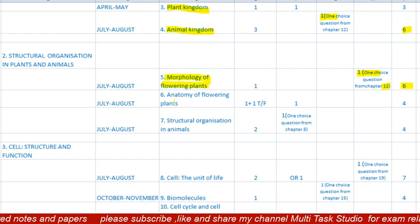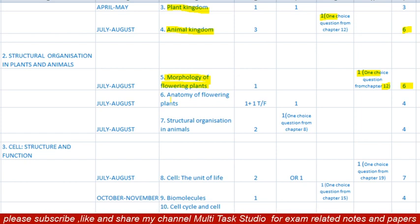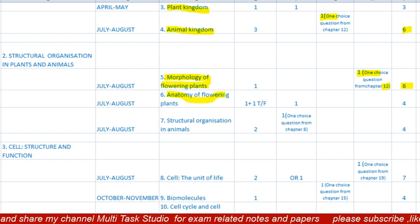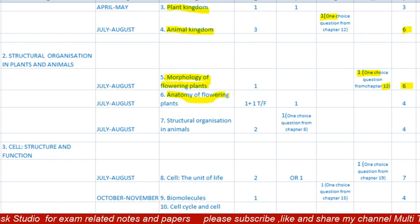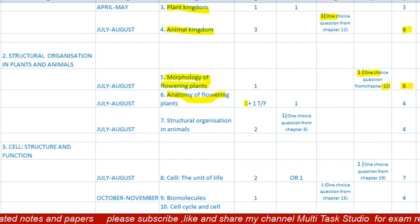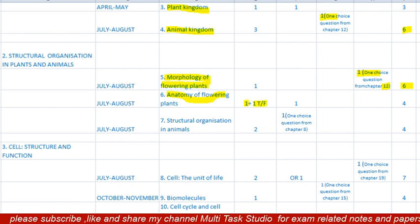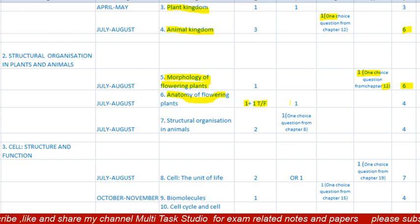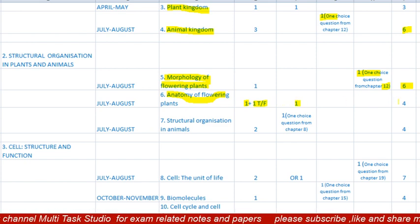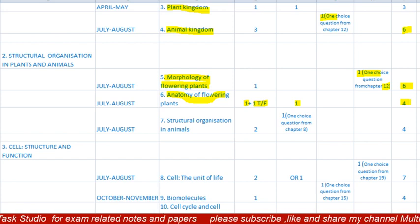The sixth lesson is 'Anatomy of Flowering Plants,' also to be completed in July/August. There will be one MCQ of one mark, one true/false of one mark, and one question of two marks. Total paper will be four marks.